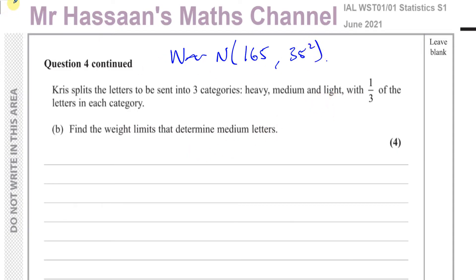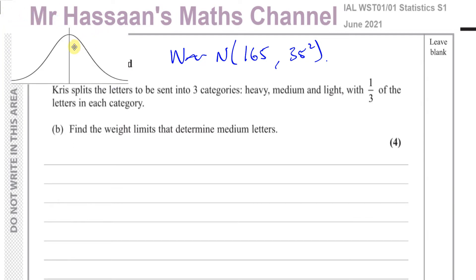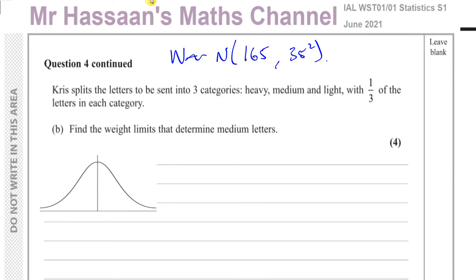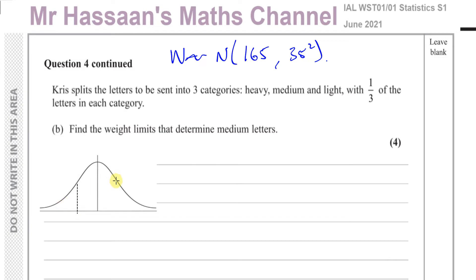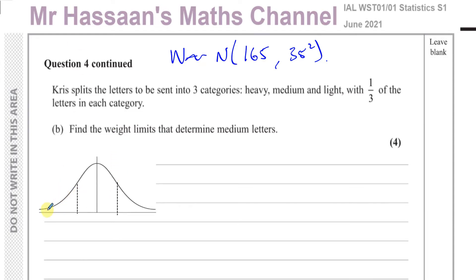Taking the bell curve and splitting it into three equal parts: one third are light letters on the left, one third are medium in the middle, and one third are heavy on the right. We need to find the boundary W values between the categories. We know the mean is 165; we need to find the two boundary values, and we also need the corresponding Z values.